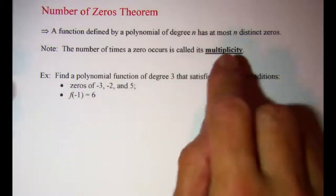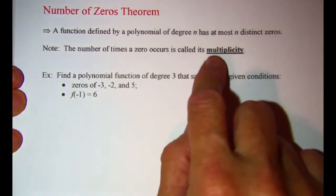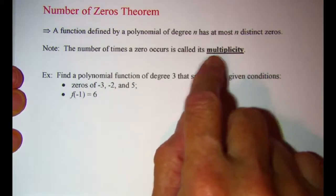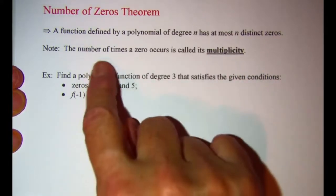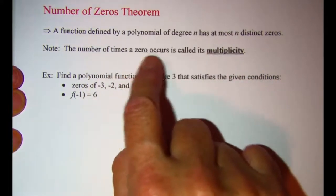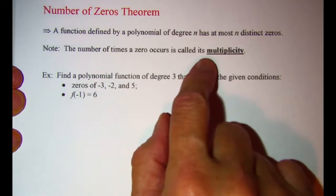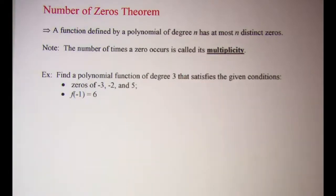Also, a word that might be new to you is multiplicity. The number of times that a zero occurs is called its multiplicity.